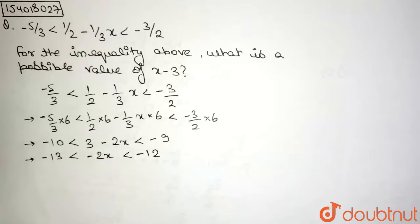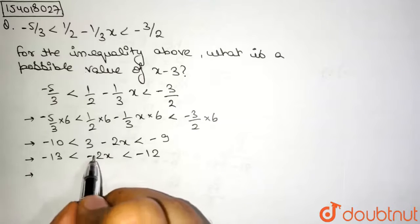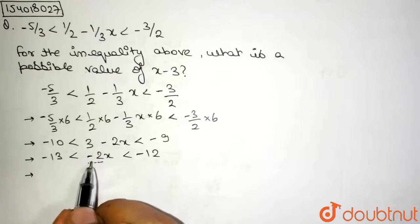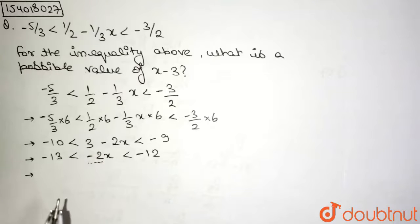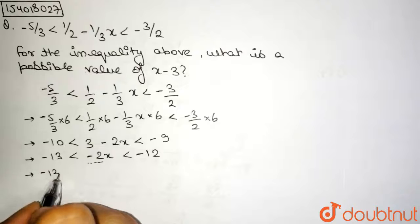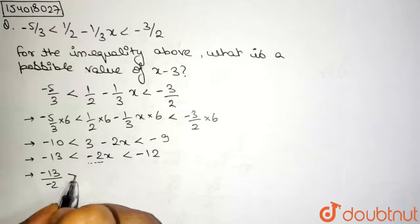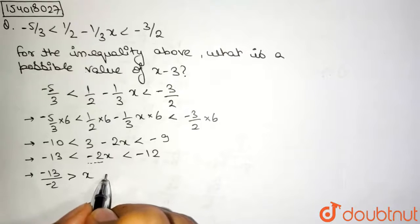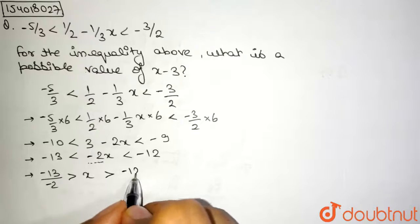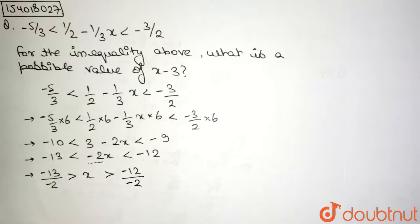Now what do I do? I divide this entire thing by minus 2. Now this step is very important. When we are dividing with something having a minus sign, we have to change the direction of the inequality. So this less than sign becomes greater than. What do we obtain? Minus 13 upon minus 2 is greater than x, which is greater than minus 12 upon minus 2.